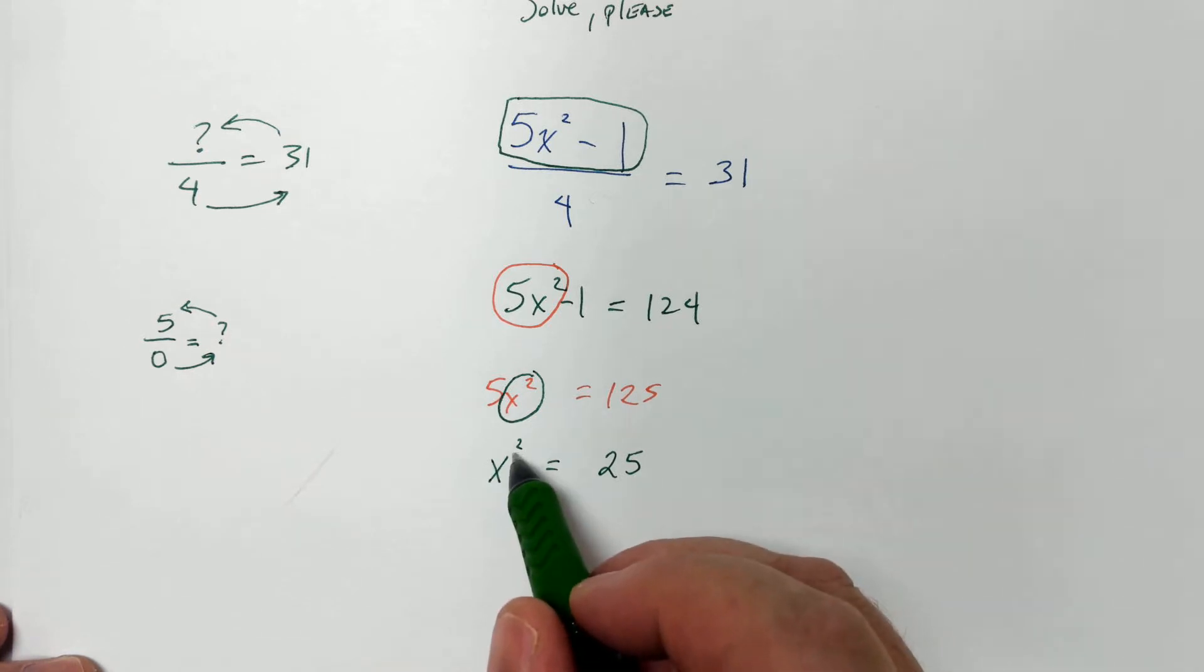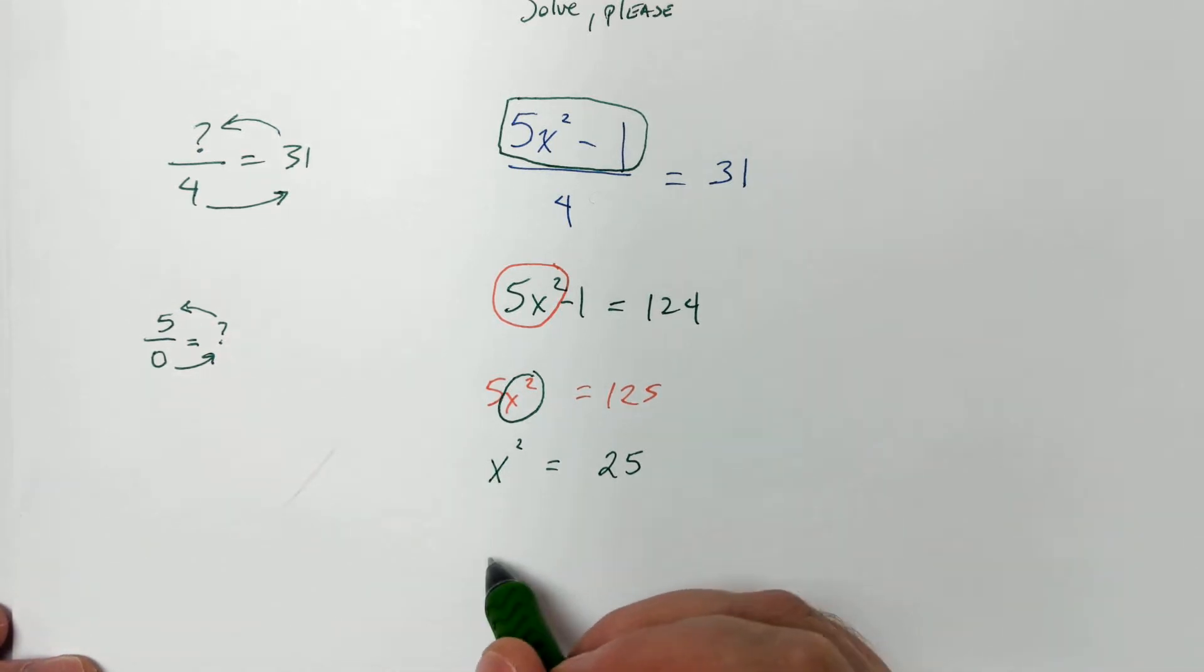Now, x squared says this is a number times itself. So, what number times itself equals 25? 25. 5 times 5 is 25. That's it.